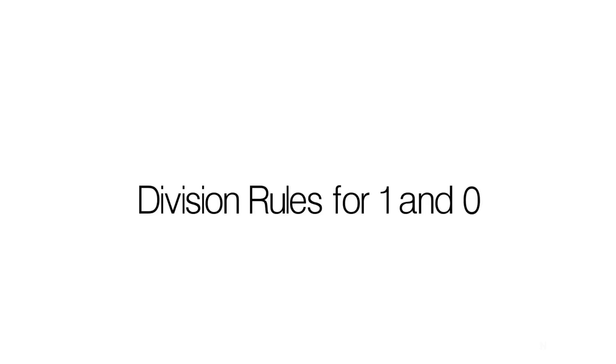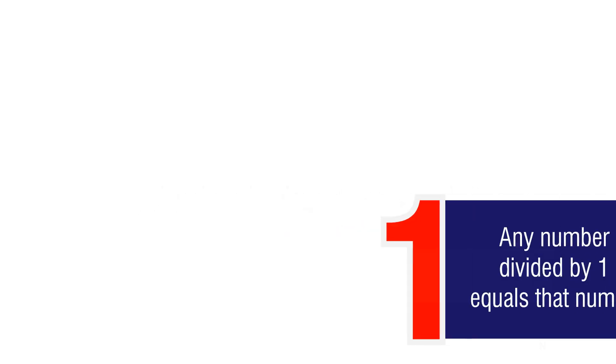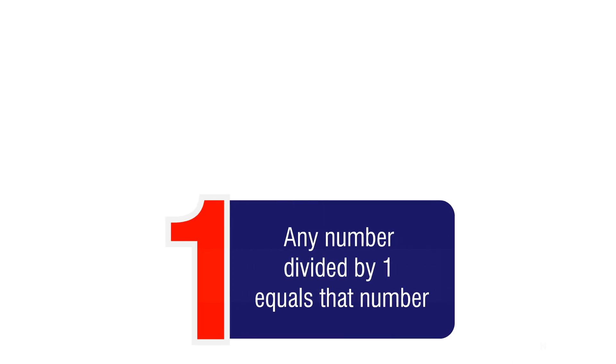Division rules for 1 and 0. Rule number 1: any number divided by 1 equals that number.